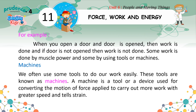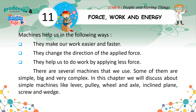Machines: We often use some tools to do our work easily. These tools are known as machines. A machine is a tool or a device used for converting the motion of force applied to carry out more work with greater speed and strength. Machines help us in the following ways: they make our work easier and faster, they change the direction of the applied force, and they help us to do work by applying less force.